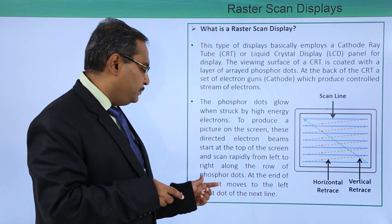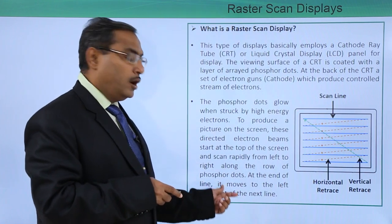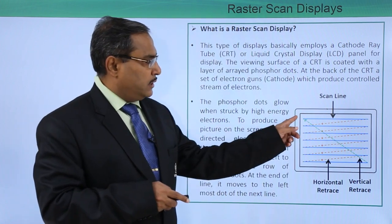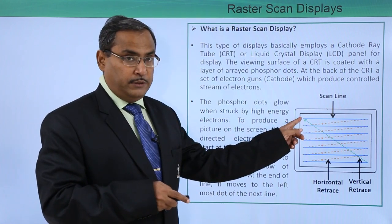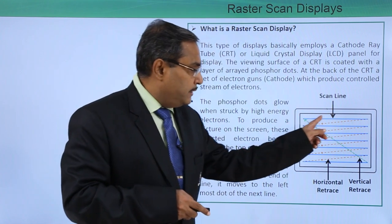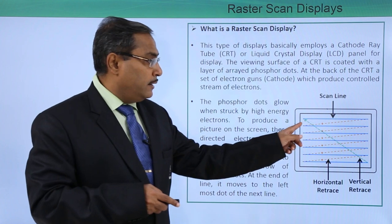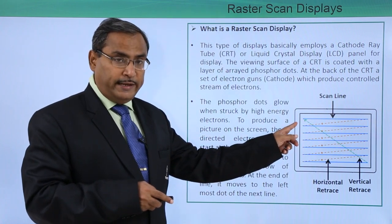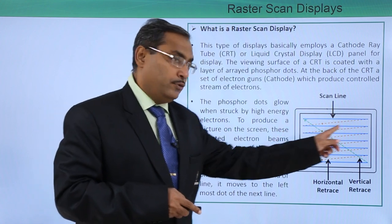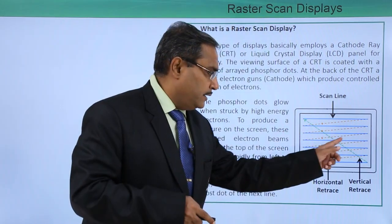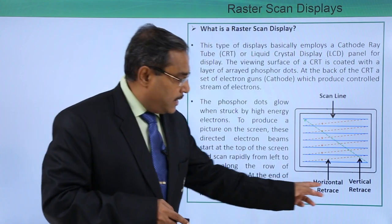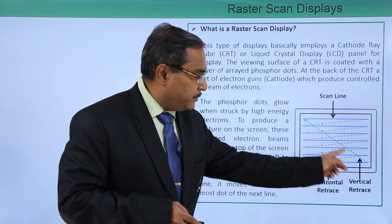At the end of the line, it moves to the leftmost dot of the next line. The scanning starts from the upper left top corner, scanning from left to right. This process continues, and the movement back is known as horizontal retrace, while returning to the top is known as vertical retrace.